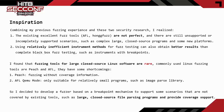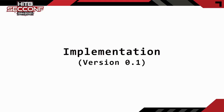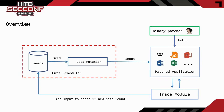Next, I will introduce the implementation of TripFuzzer, including the software architecture and the implementation of each module. First, let's take a look at the overall architecture. TripFuzzer can be divided into four components: the binary patch module, the father schedule module, the seed mutation module, and the trace module.